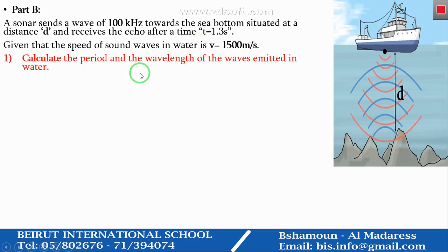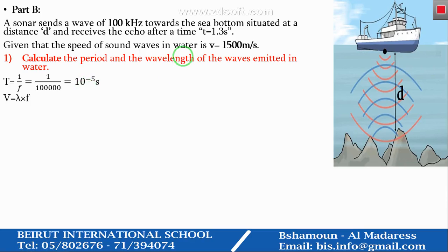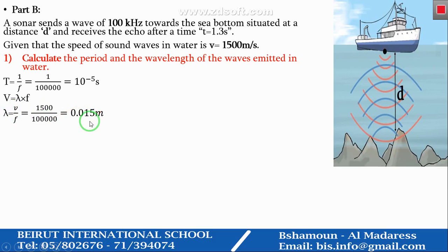Part 1: Calculate the period and the wavelength of the wave emitted in water. To find the period, we use the relation T = 1/f. So T = 1 divided by 100,000, which gives 10 to the power minus 5 seconds. To find the wavelength, we use the relation v = lambda times f. So lambda = v divided by f = 1,500 divided by 100,000, which equals 0.015 meters.